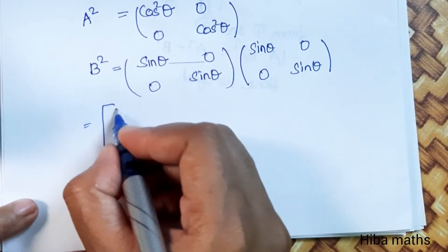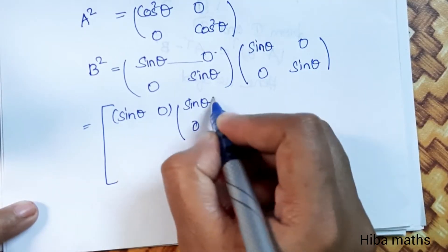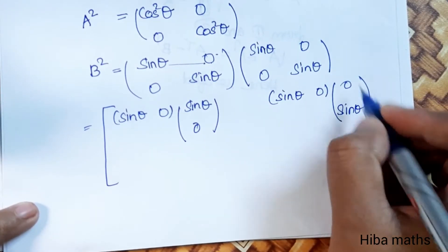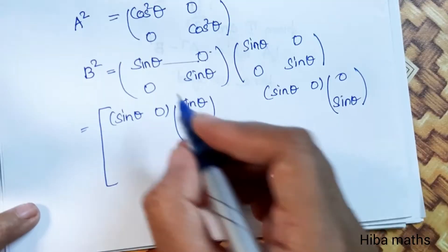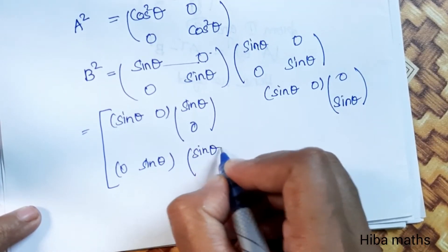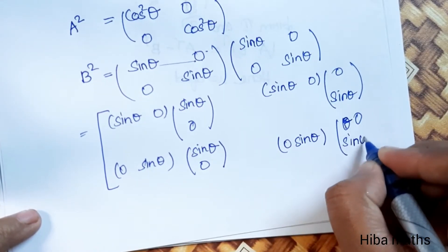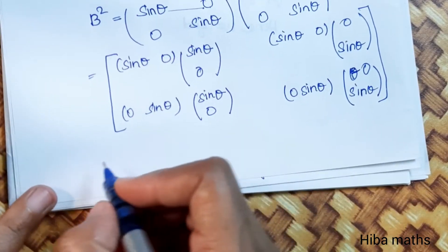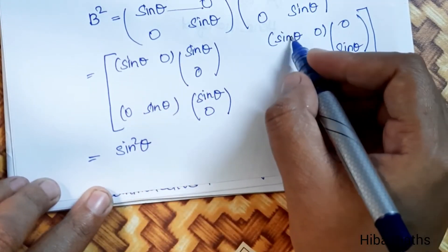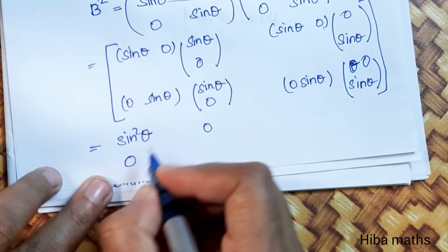Working through B squared row by column: first row, first column — sin theta times sin theta gives sin squared theta, plus 0 times 0 is 0. First row, second column — sin theta times 0 plus 0 times sin theta gives 0. Second row, first column — 0 times sin theta plus sin theta times 0 gives 0. Second row, second column — 0 times 0 plus sin theta times sin theta gives sin squared theta. So B squared equals [sin squared theta, 0; 0, sin squared theta].